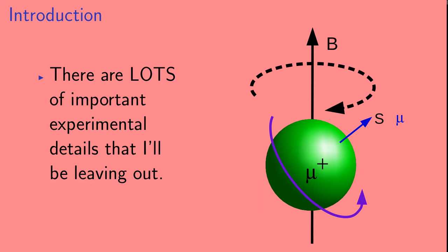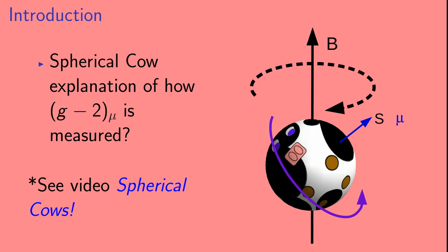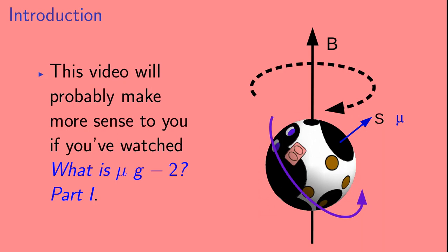An important point I should make up front is that there are lots of important experimental details that I'll be leaving out. So perhaps it's best to think of this as a spherical cow explanation of how g-2 is measured. This video will probably make a lot more sense if you've already watched the video, 'What is g-2 of the muon? Part 1.'